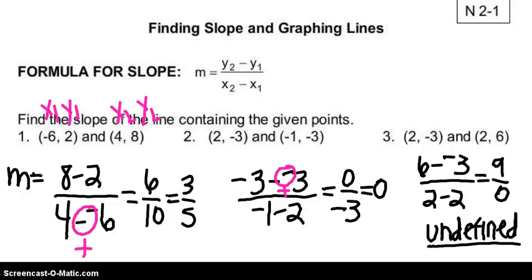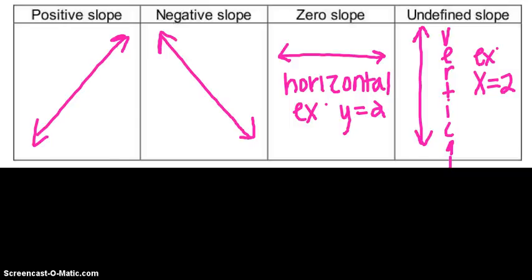Let's look at problem 3. I should have 6 minus negative 3 — that makes it a plus, so 6 plus 3 is 9. Then I have 2 minus 2, which is 0. If I have a 0 in the denominator, my slope is undefined. For slope types: a positive slope goes up left to right; negative slope goes down; a zero slope means a horizontal line like y equals 2; and undefined slope is a vertical line like x equals 2.